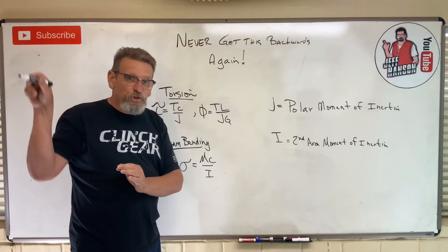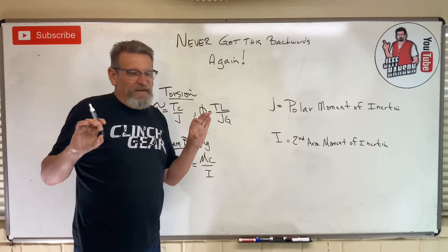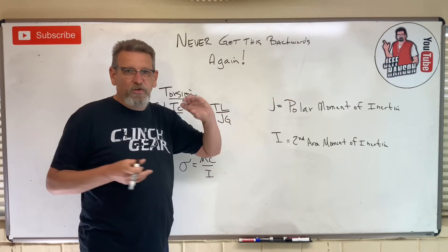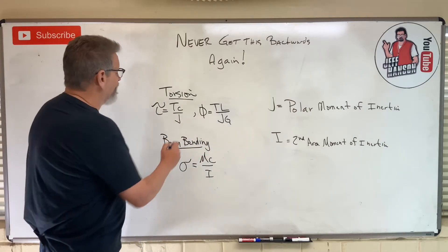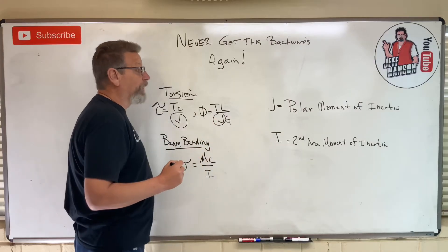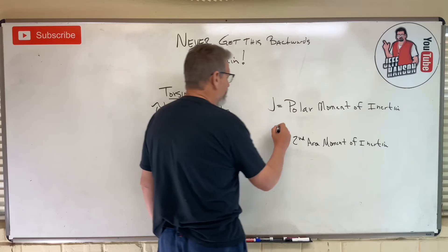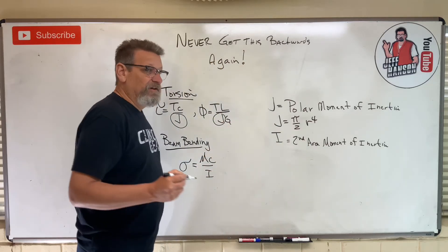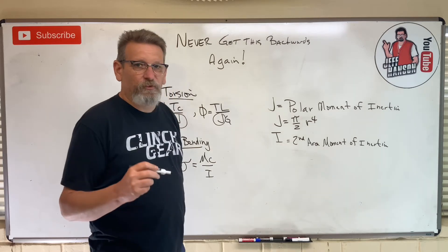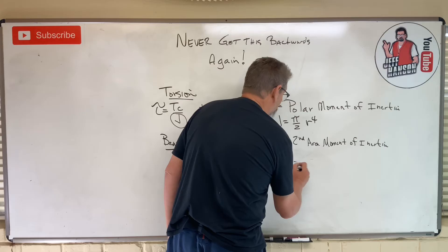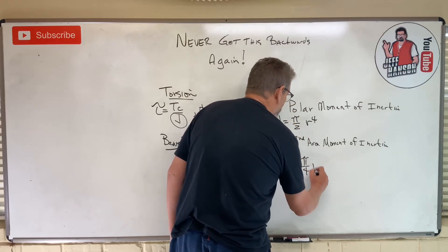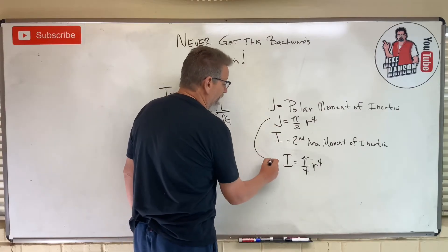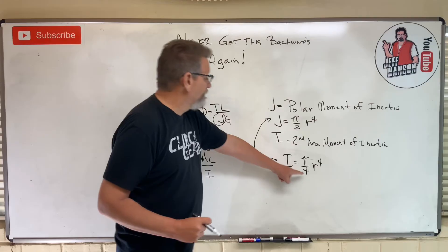For rectangular beams, I equals one-twelfth bh cubed. But we also deal with many round shafts — motors, gearboxes, power transmission equipment — so we need J, the polar moment of inertia, which equals pi over 2 times r to the fourth, while I for round shafts equals pi over 4 times r to the fourth. Students constantly mix these up, putting the divide-by-four where the divide-by-two should go and vice versa.